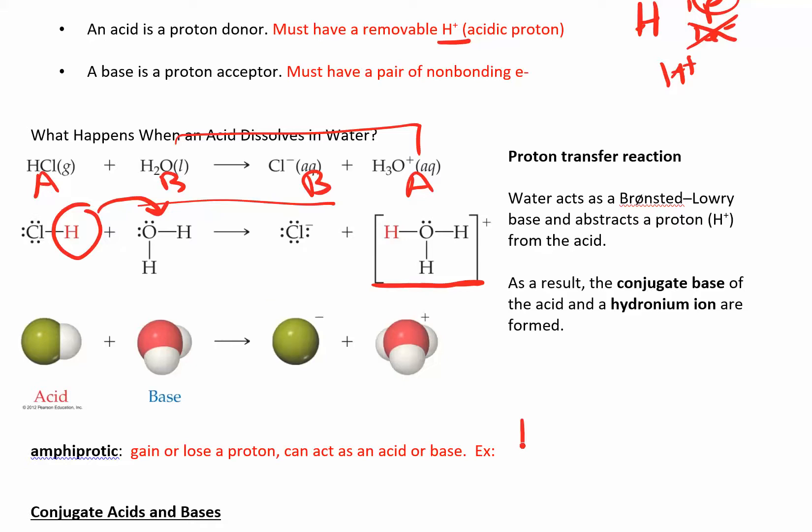Here are some other things that are amphiprotic. So we have water, HCO3 minus. So that minus means it can take on a proton. The H out in front means it can donate a proton. So that's why it can act as either an acid or a base. And so whenever you see that, you can think this thing is amphiprotic. And there's another one.